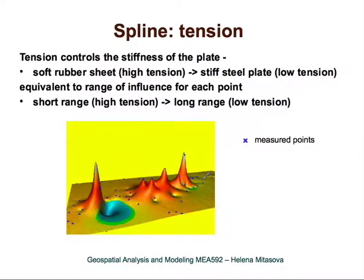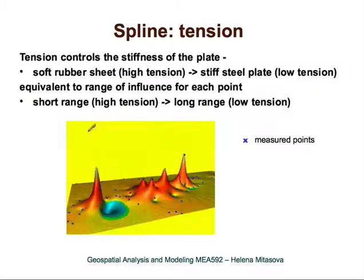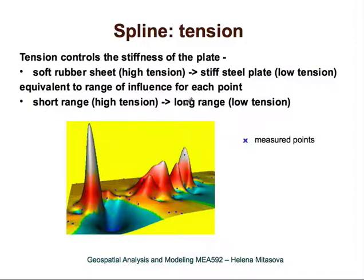Here is an animation showing how tension controls the stiffness of the plate we are modeling with this spline with tension. With high tension it behaves like a soft rubber sheet. By decreasing the tension, we move to a stiff steel plate. If there are very sharp gradients between the points, the steel plate is too stiff and it overshoots and undershoots. This tuning of tension is equivalent to range of influence: with high tension the range is very short, giving narrow spikes; as tension decreases, the range increases and we get a smoother surface, but with potential overshoots.